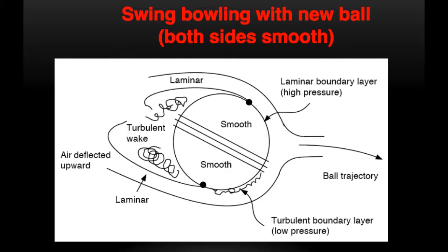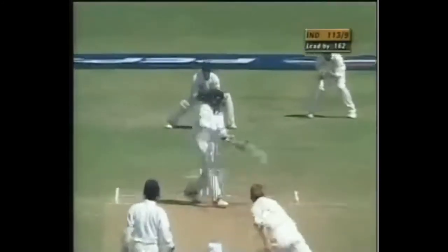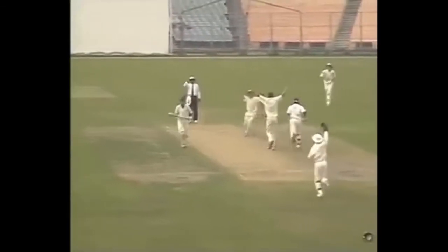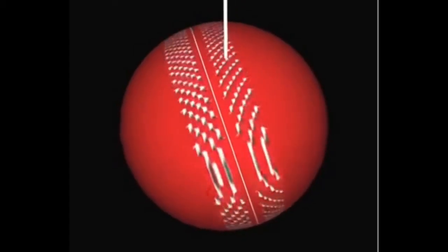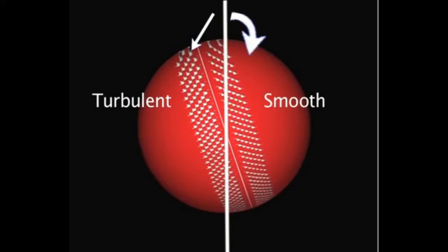Turbulent airflow refers to the rough flow of air around the ball in which many layers of air mix together in a chaotic manner. Reynolds number can be used to determine whether the flow of air around the ball is going to be turbulent or laminar. In the case of fast bowling, the fast bowlers usually swing the ball by making the seam inclined at an angle of 15 to 25 degrees to the direction that the ball is headed.